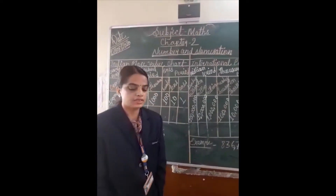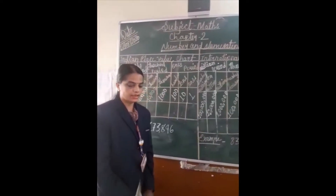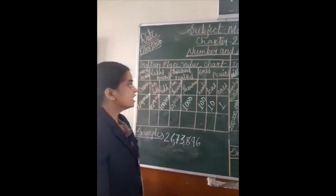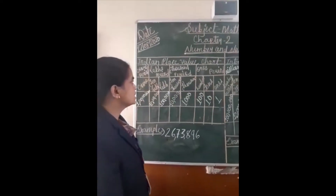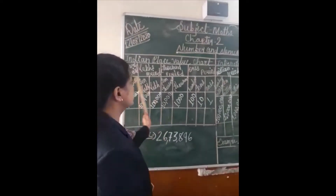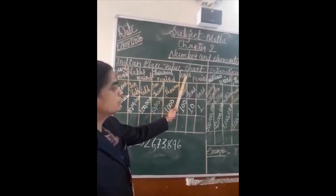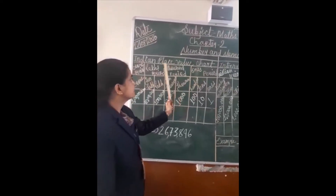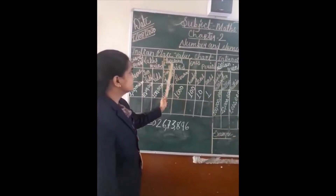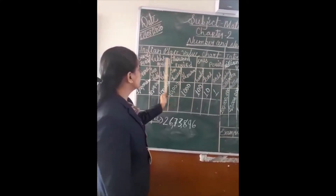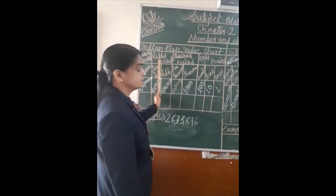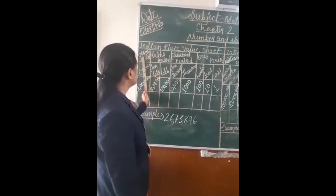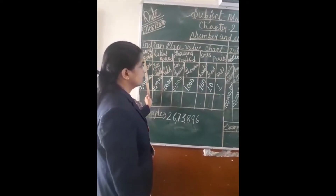First we will take the Indian place value chart. According to this, four periods are there. First is the ones period, second is the thousands period, third is the lakhs period, and fourth is the crores period.